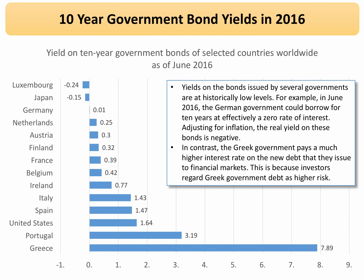To put this into context, here's a chart from the summer of 2016 showing yields on 10-year government bonds across a range of countries. For many countries the yield is very low — less than 1%, and in some cases it's negative. Compare that with Greece, where the government has to pay nearly 8% yield per year on 10-year debt to attract investors. These big spreads in yields across countries are partly due to factors such as deflation in Japan and the risk of bond default in crisis-hit Greece.